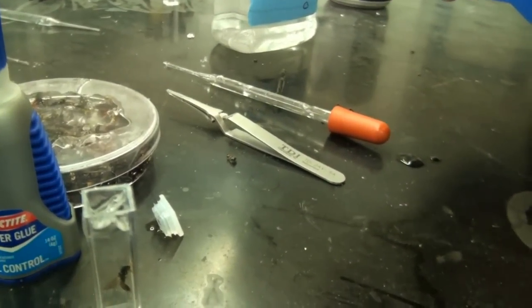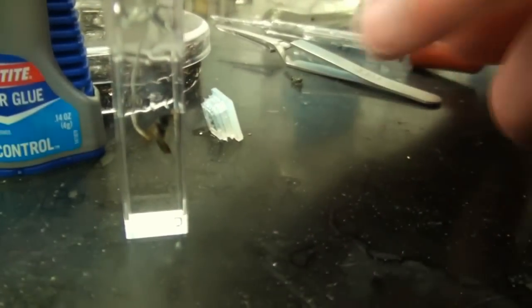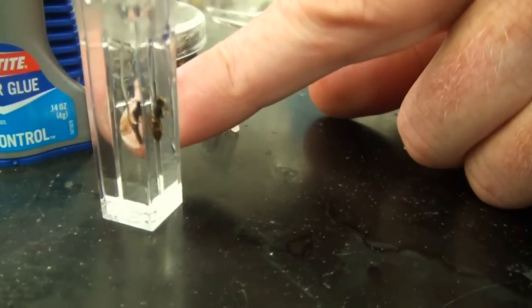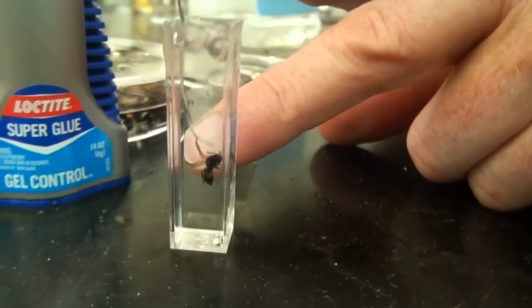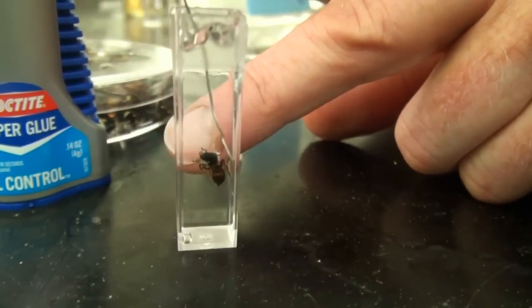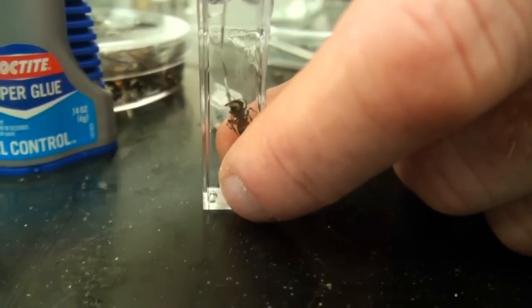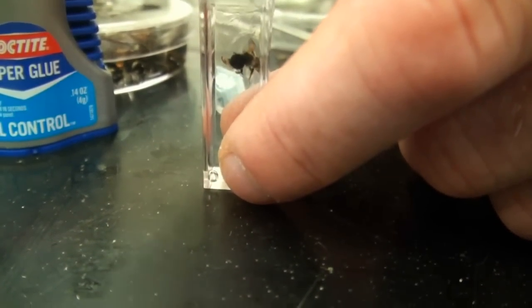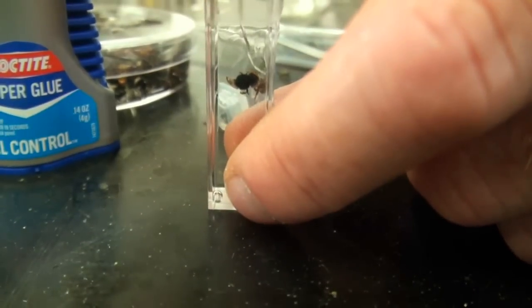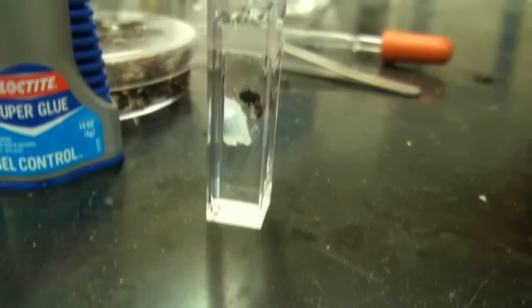But you can now move this specimen around however you like in the hand sanitizer jar by skillfully, which I'm not demonstrating very well, using the probe to position the specimen and the wings and the antennae. So you get the point.